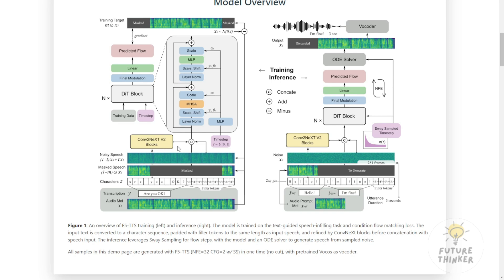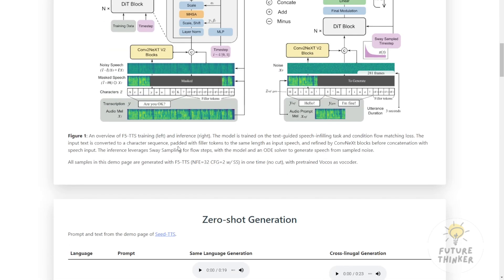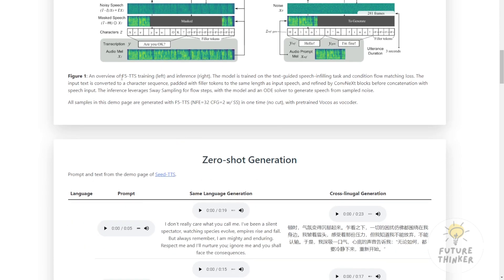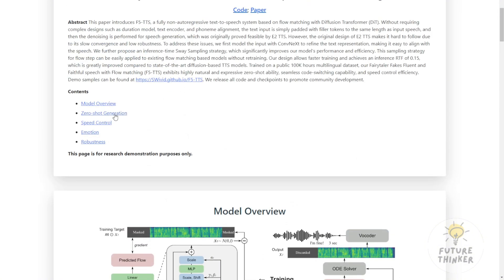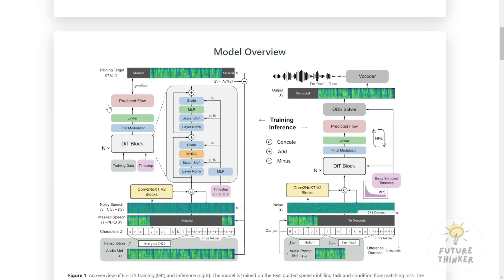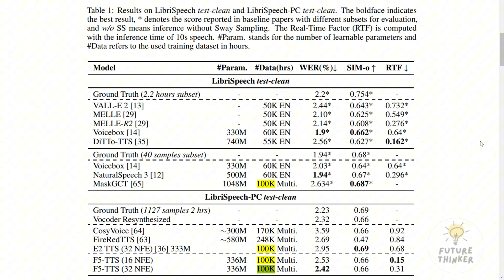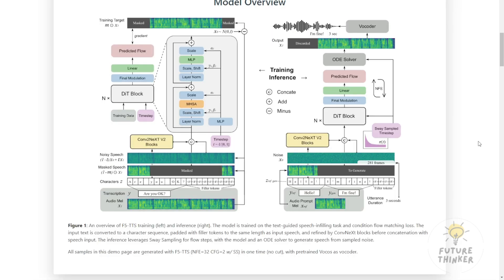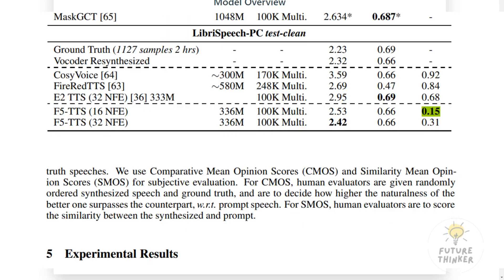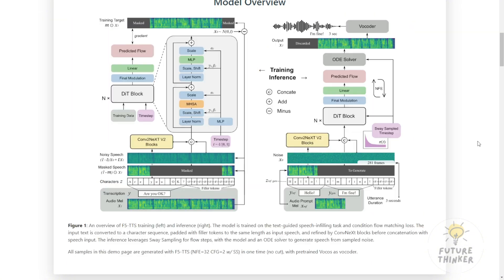Now let's talk tech specs. F5 TTS is built on principles of conditional flow matching and optimal transport. It uses a diffusion transformer as its backbone and incorporates ConvNeXt v2 blocks for enhanced temporal modeling. The researchers trained it on a massive 100,000-hour multilingual dataset called Amelia. One of the most impressive features is its inference speed — F5 TTS achieves a real-time factor of 0.15, meaning it's really fast compared to other state-of-the-art diffusion-based TTS models.